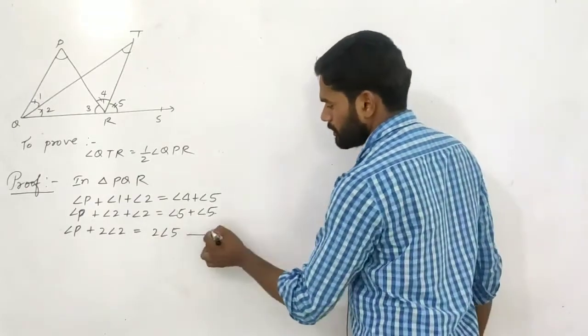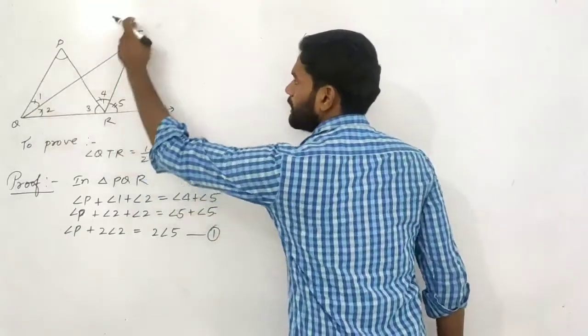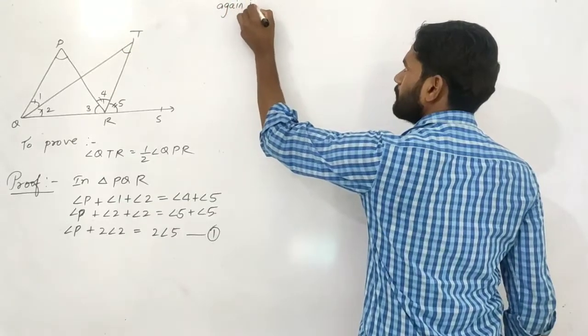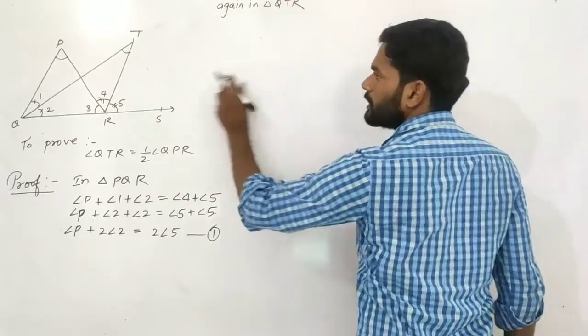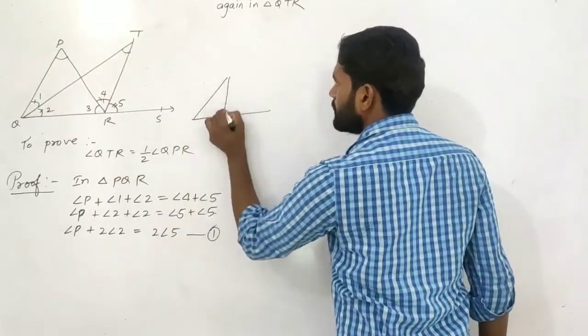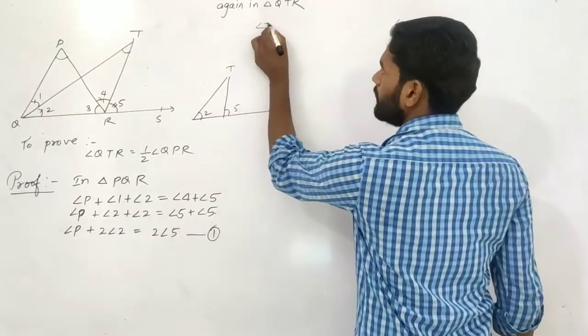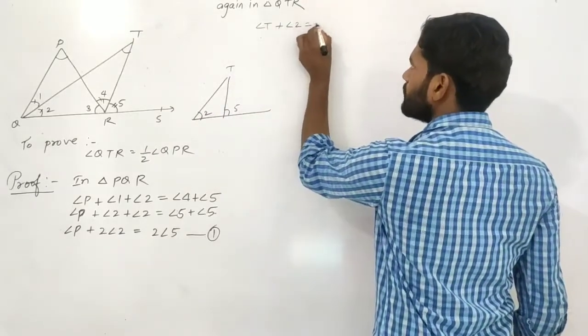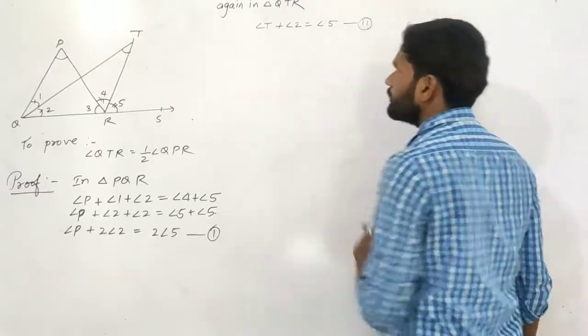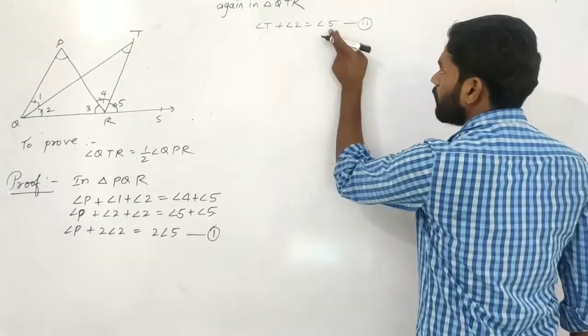Again in triangle QTR, the sum of angle T and angle 2 equals angle 5. This is equation number second. I hope you are understanding.